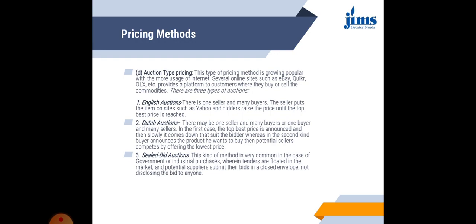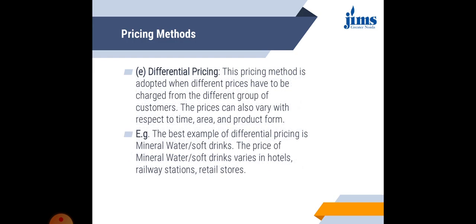The third type of auction pricing is the sealed bid auction, which is common in government or industrial purchases. Here, tenders are floated in the market, and whoever wants to take that tender can bid a price in a closed envelope. That bid price is not disclosed to anyone except the concerned authorities.